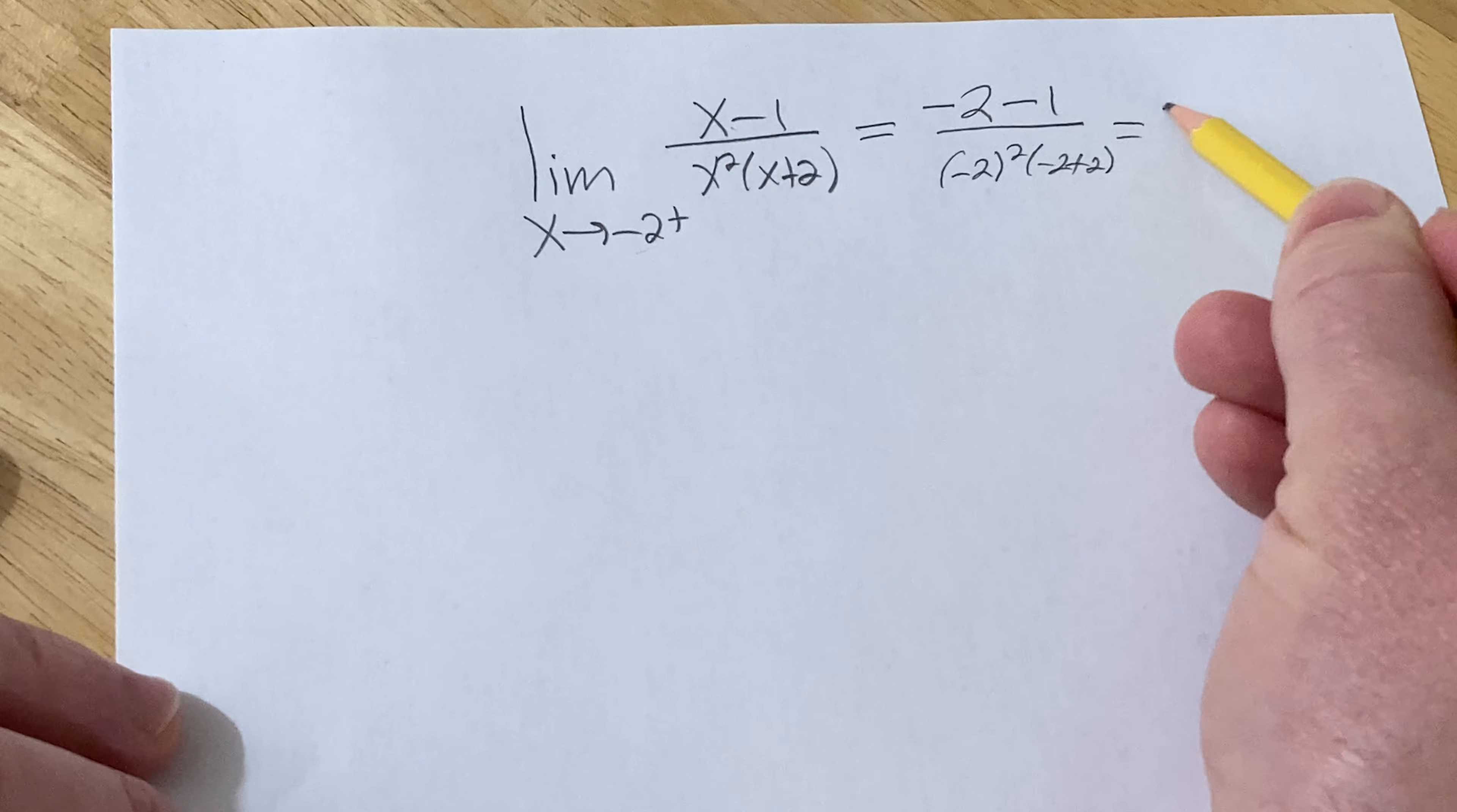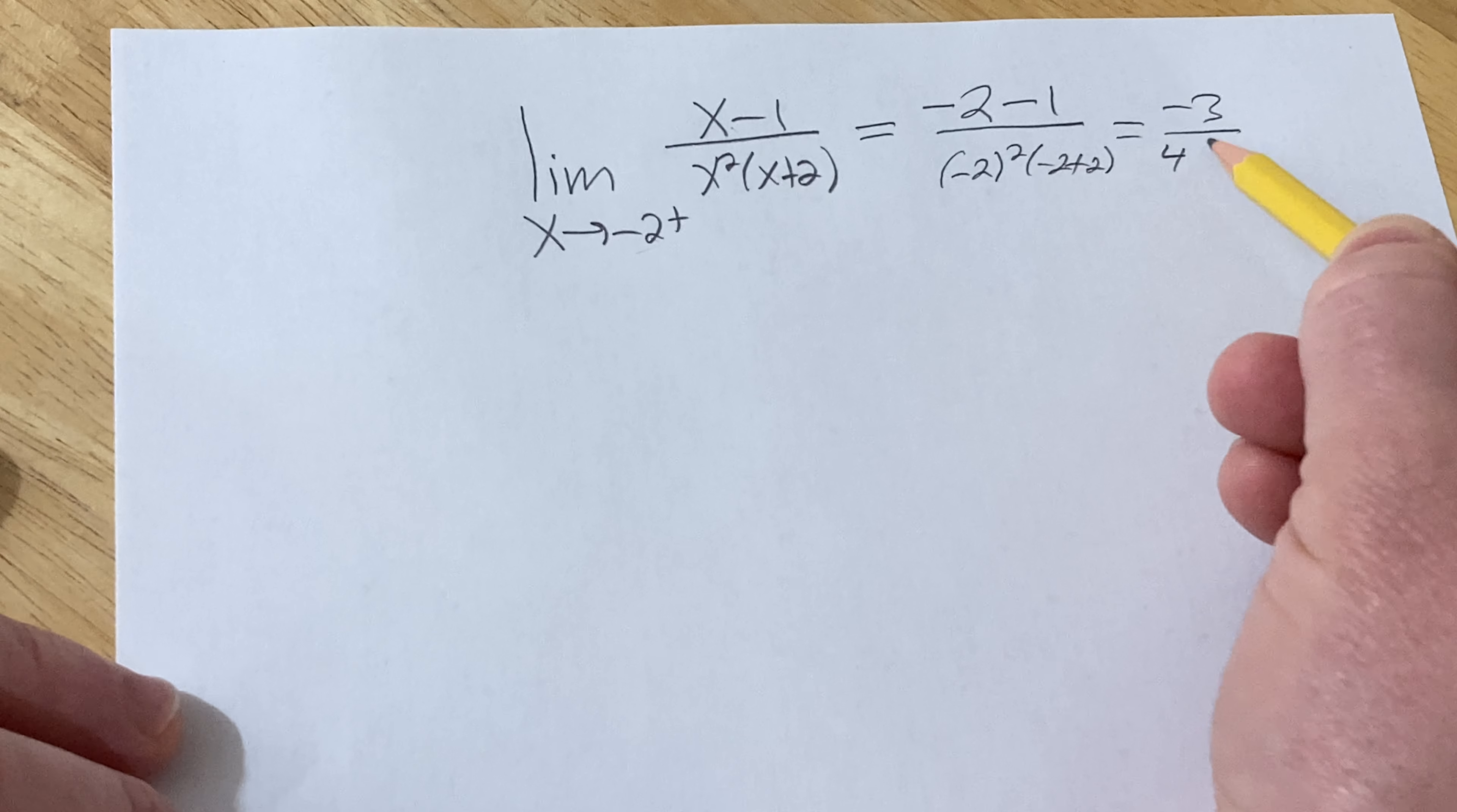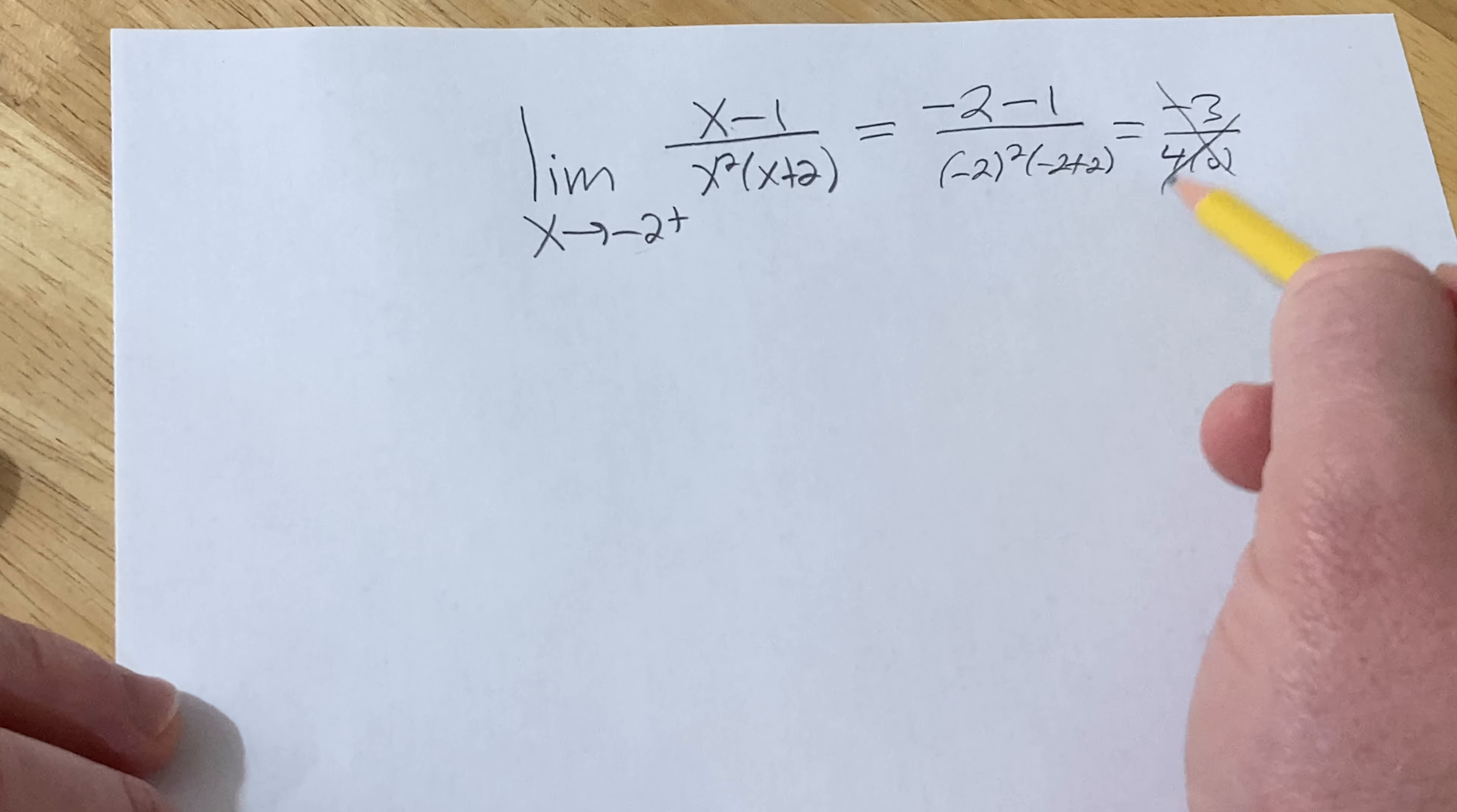That's basically going to give you negative 3 over 4 times 0. So you end up with 0 on the bottom, so that's no good.